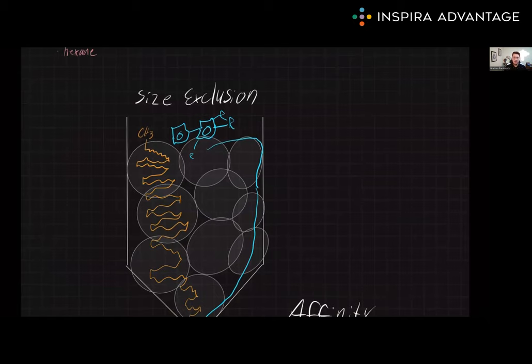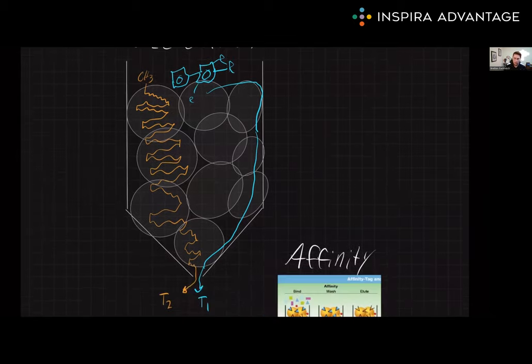Next up, we have size exclusion chromatography. This is the third type of chromatography commonly used in protein isolation. In this type of chromatography, the stationary phase material contains porous beads that are designed to allow small molecules to enter the pores, shown here in orange, while larger molecules in blue are excluded and therefore elute more quickly. This makes size exclusion chromatography ideal for separating proteins based on their size, with smaller proteins eluting more slowly and larger proteins eluting more quickly.